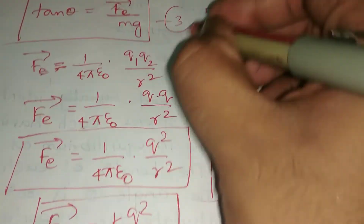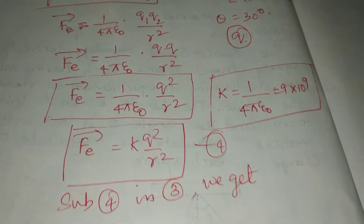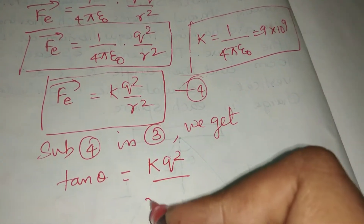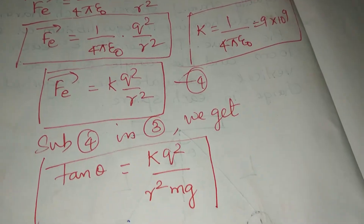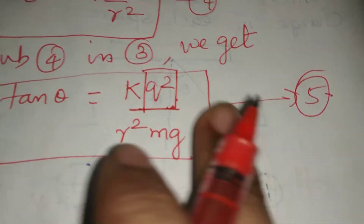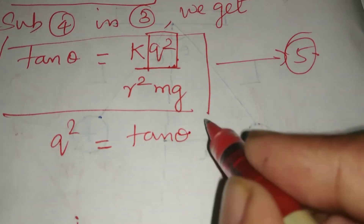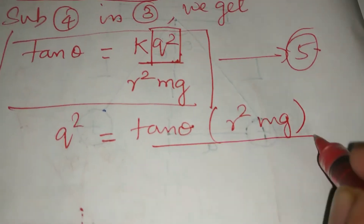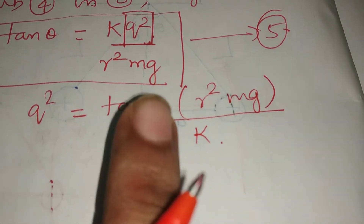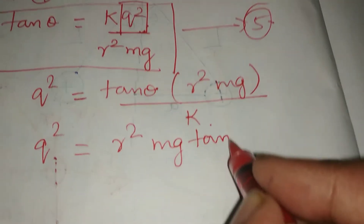Substituting Fe into equation 3, we get tan theta = (k q² / r²) / mg. This is equation 5. Rearranging to find q, we get q² = tan theta × r² × mg / k, which is the expression for q².